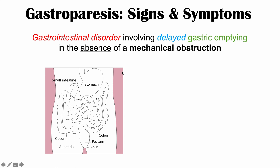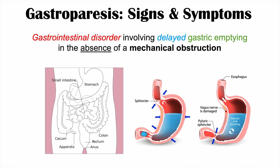If you take a look at this diagram, here is your stomach going into your small intestine, going into your large intestine. Normally, there is nervous system supply to your stomach that allows proper contraction and release of stomach contents in a timely fashion. However, in gastroparesis, the nervous system supply can become damaged or injured, so your stomach is not able to process the food and release it properly through the pyloric sphincter into your small intestine. So it just sits in your stomach — that is the main issue with gastroparesis.